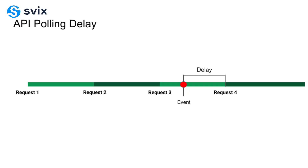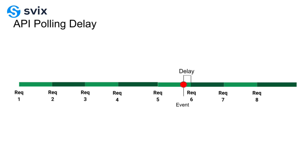One of the major technical differences is that webhooks are real time. Because the event is being sent by the source of that event, they know exactly when it happens, and as soon as it happens they can send the update to you. Whereas with polling, there's always a delay, and to reduce that delay and get closer to real time, you need to send more and more requests more frequently. Because of this, API polling tends to be a lot more resource intensive, and webhooks tend to be a lot more resource efficient.